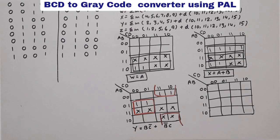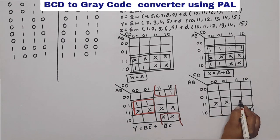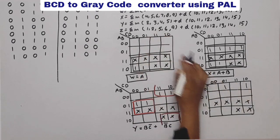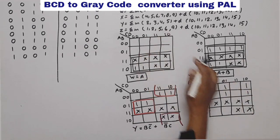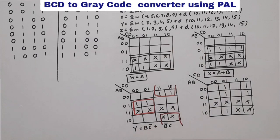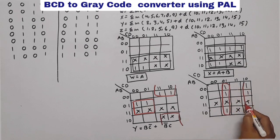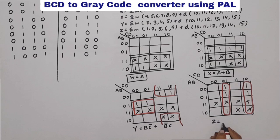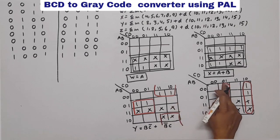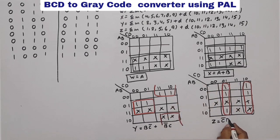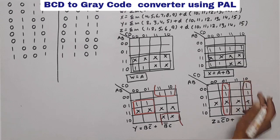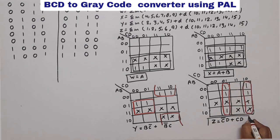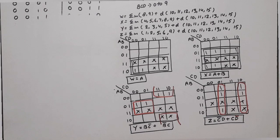Now for Z, don't cares are the same. Minterms are 1, 2, 5, 6, and 9. Here also two quads are formed. From the first quad we get C-bar D, and from the second quad we get CD-bar. So Z equals C-bar D plus CD-bar. These are our four equations. Now we will build this circuit using PAL.